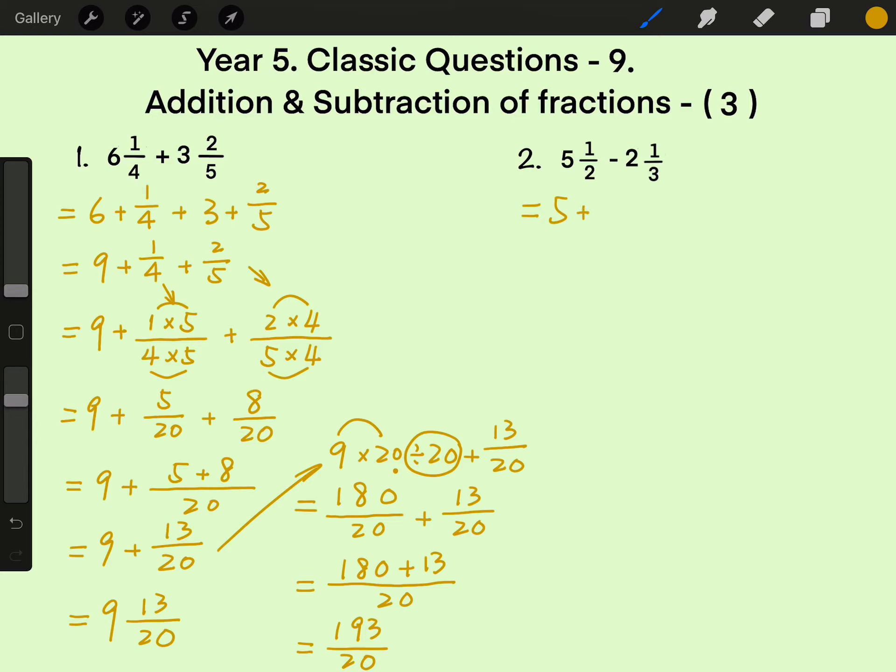5 plus 1 half minus 2 plus 1 third in brackets. Now let's get rid of the brackets.